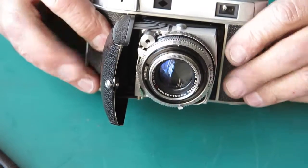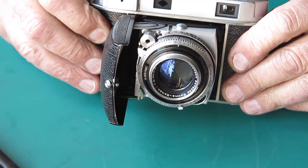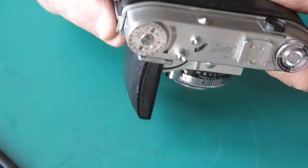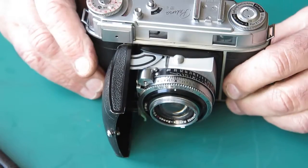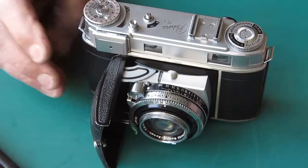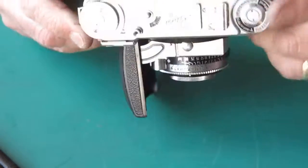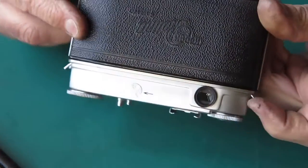Then the shutter, the little bracket here that holds the main drive spring, that had been broken, so I had to replace that. On the base of the camera, I had to replace the leatherette that was entirely missing.